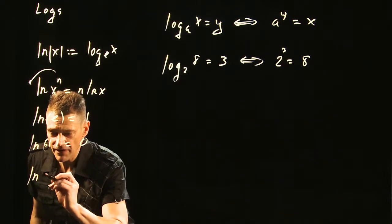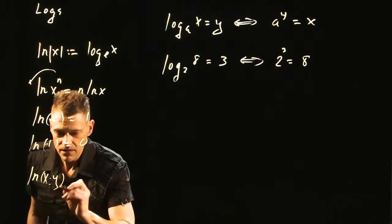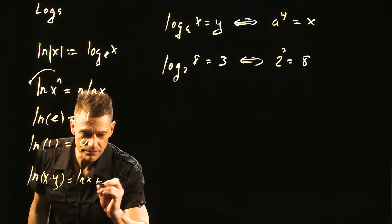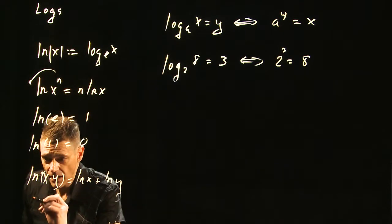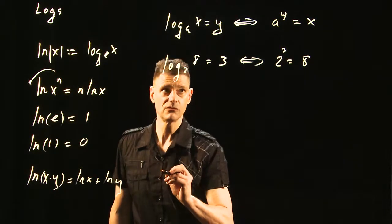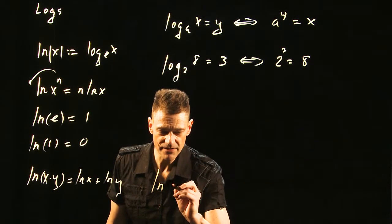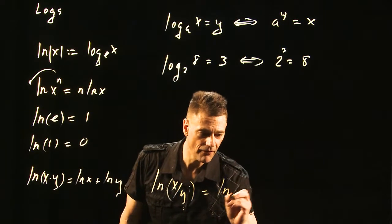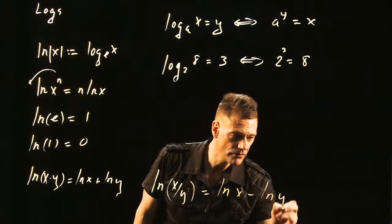If you have ln x times y, this is ln x plus ln y. And ln x divided by y is equal to ln x minus ln y.